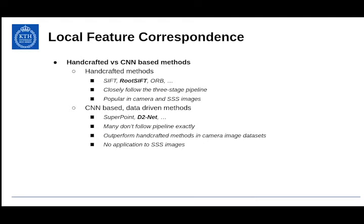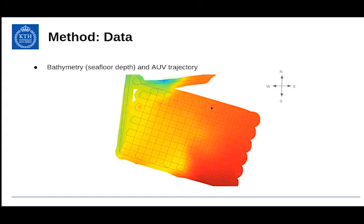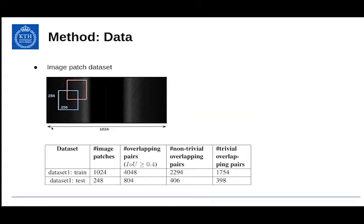The data I used for this study comes from a survey area shown here as a bathymetry plot, with the vehicle trajectory shown as thin blue lines. For this study, I only used trajectories going north and south. Given the side scan sonar waterfall images from the survey, we first divide them into an image patch dataset. As for the deep learning pipeline, we need a training set and a test set, and the training set is approximately four times larger than the test set. Importantly, the training and test sets are completely disjoint.